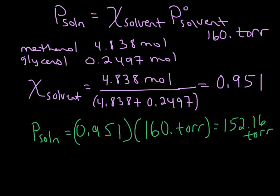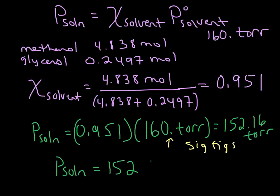Now we have to consider significant figures. Going back to the original problem, we had 23.0 grams of glycerol — three sig figs — and 160 with a decimal point — three sig figs. So we need three sig figs in our answer. The final vapor pressure for our solution is 152 torr.